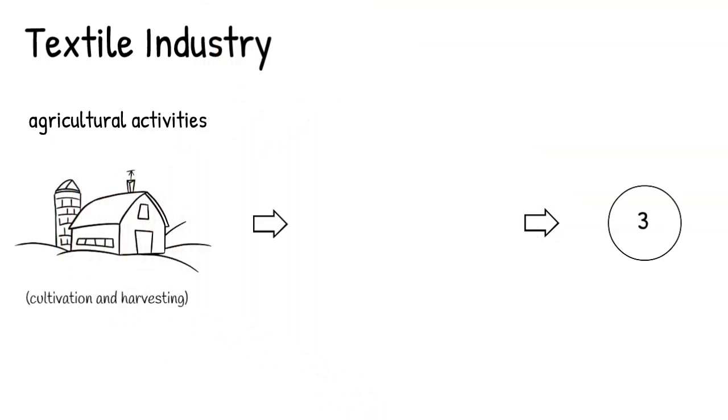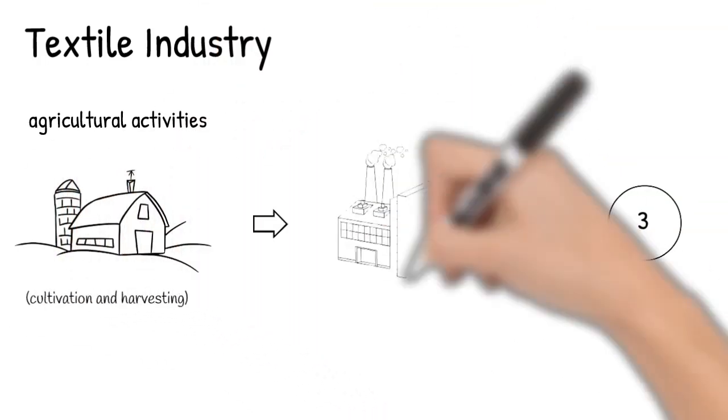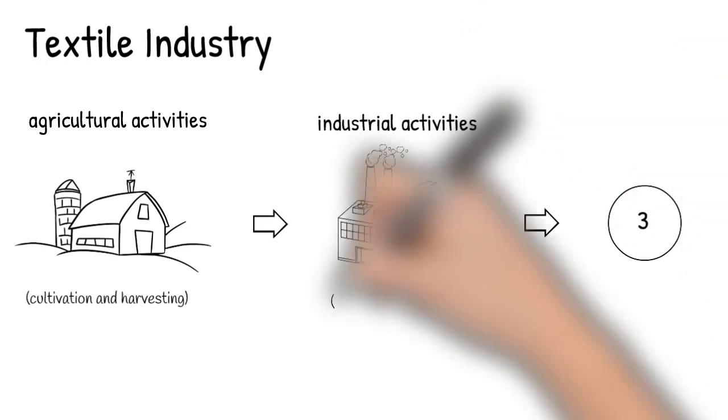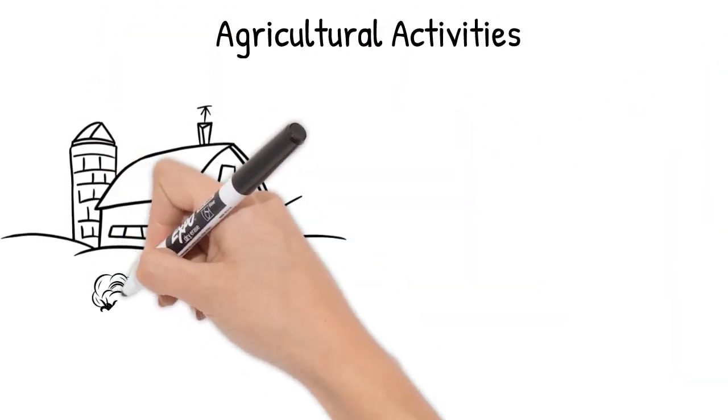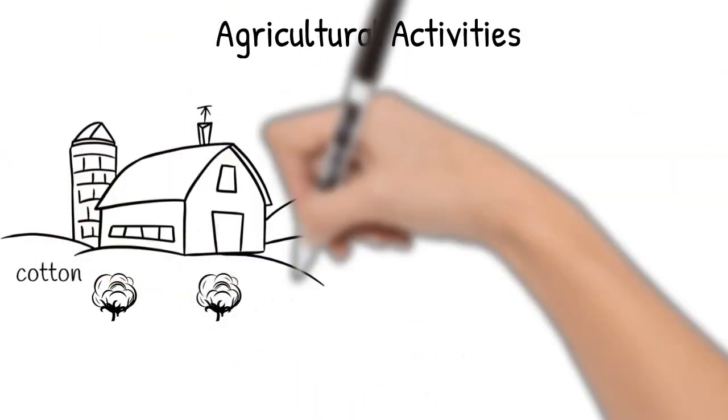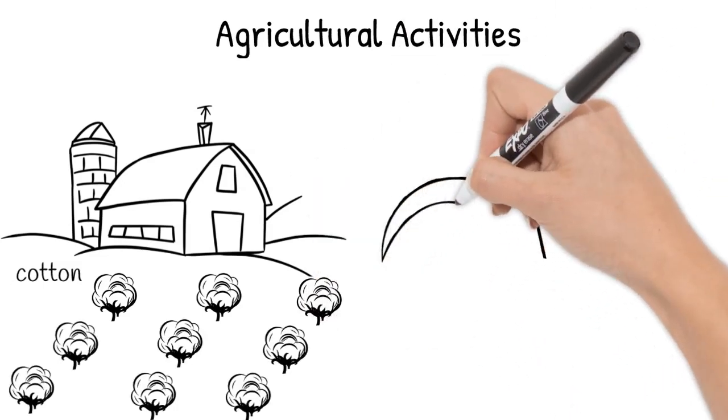followed by the industrial activities that extract and handle the fiber until these arrive to the customers, the endpoint of the supply chain. One of today's most produced fibers is cotton, but a lot of cotton is required to produce one shirt.